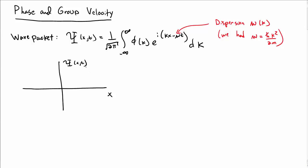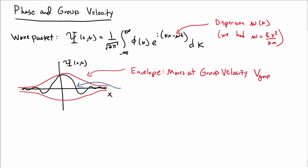So our function capital psi as a function of x will generally look something like this: it'll be semi-localized with some envelope surrounding it. We want to make a distinction between the envelope, which moves at what we call the group velocity v_group, and the ripples that make up the envelope, which move at what we call the phase velocity v_phase. These need not be the same thing.